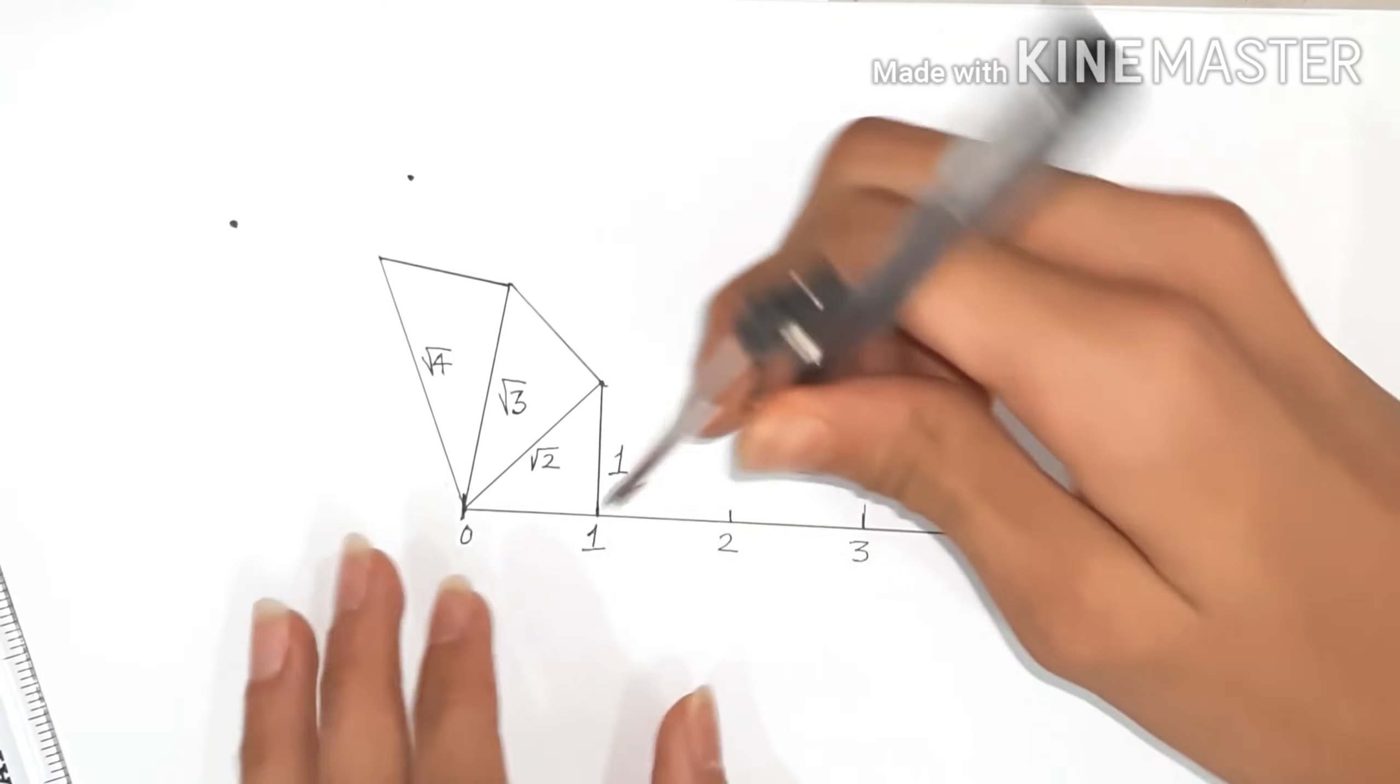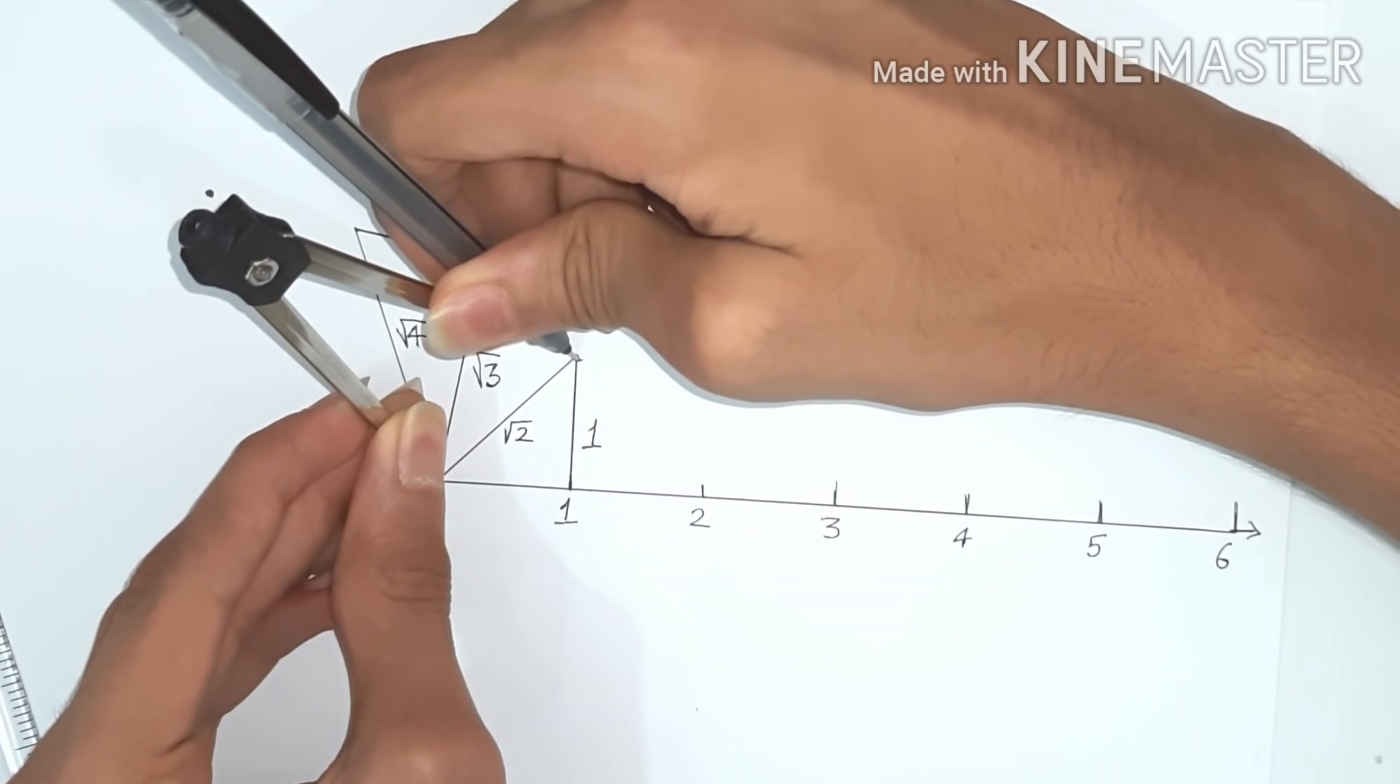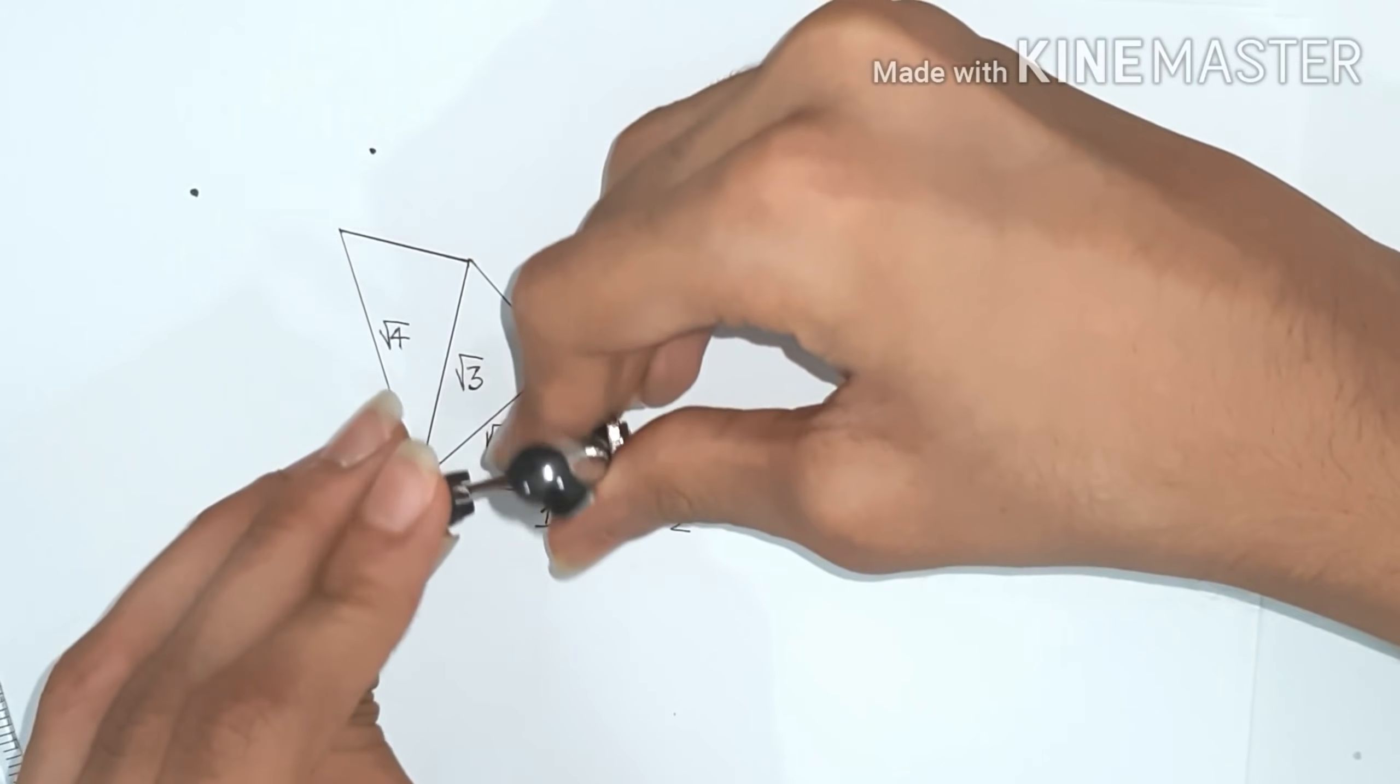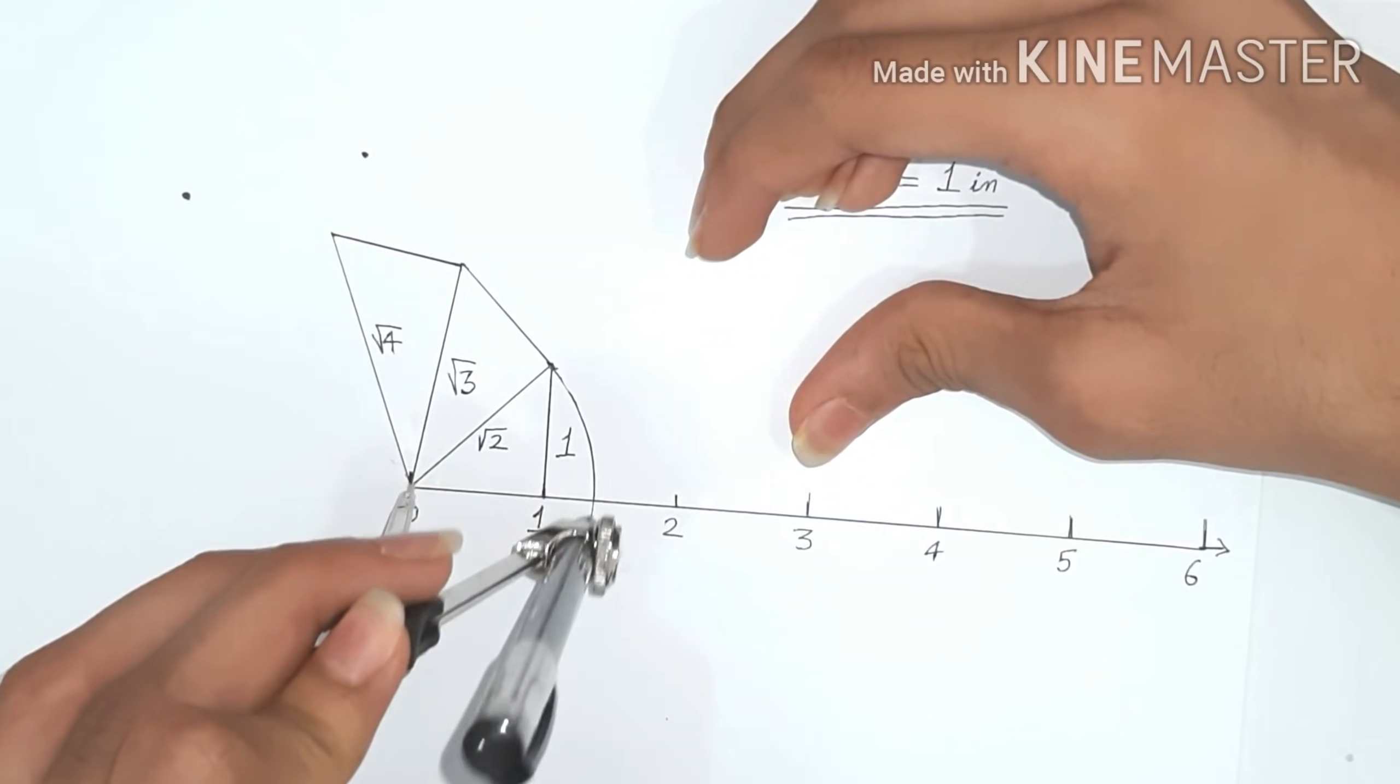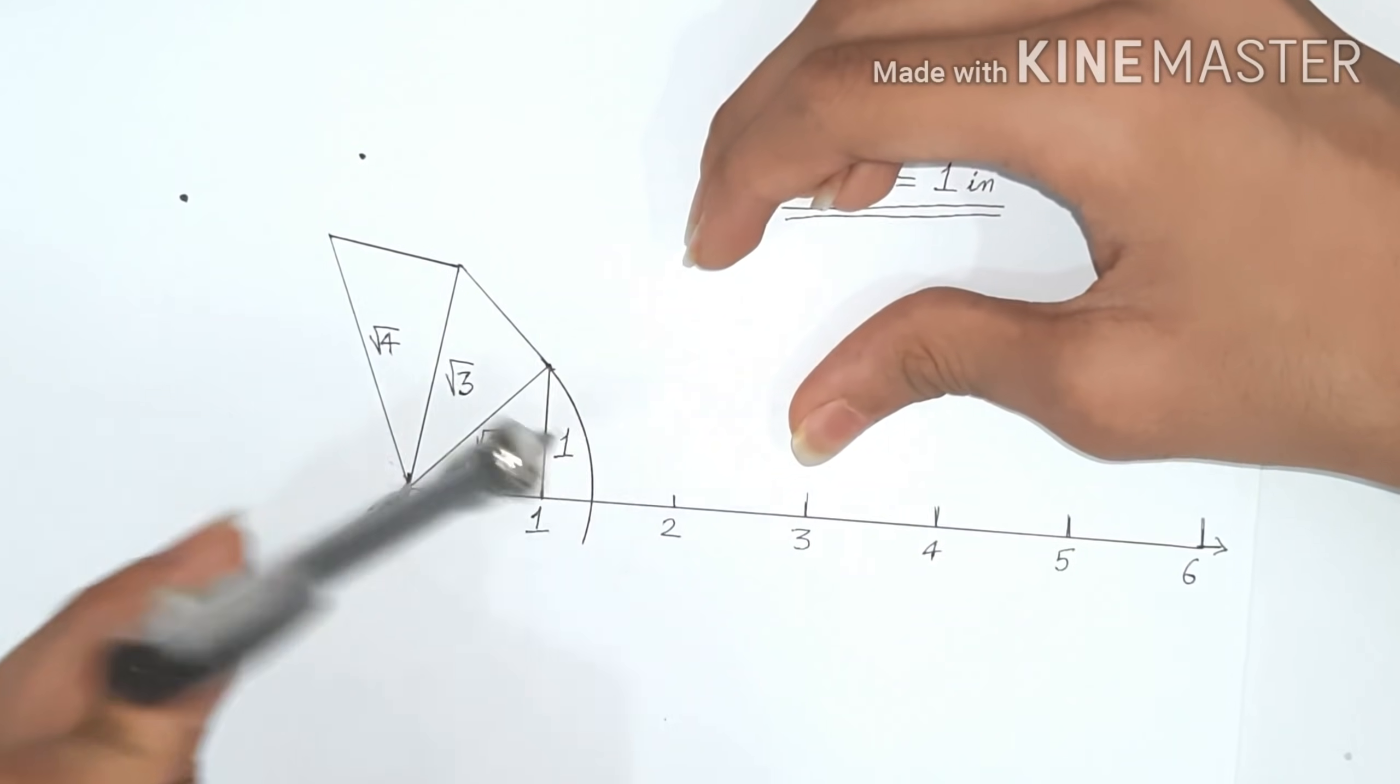For that, we'll take the radius equal to square root 2 and then we'll create an arc which cuts the number line at a certain point. That point will be square root 2. We'll do the same for square root 3, 4, and so on.